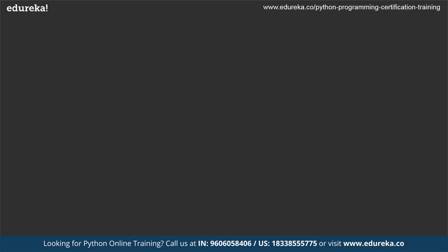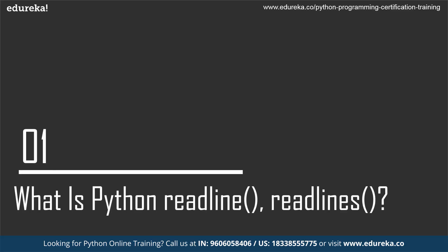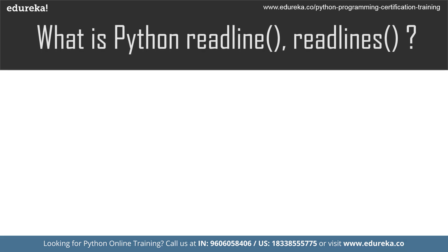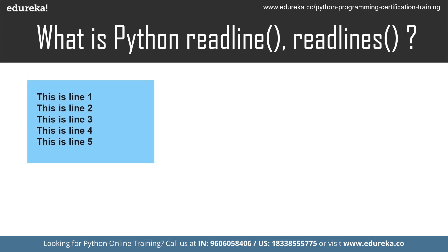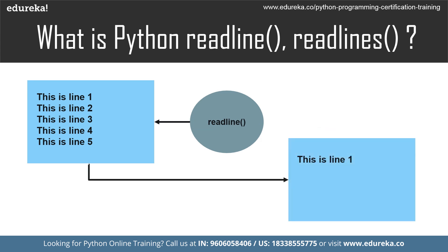Now without any further ado, let us understand Python readline. So what exactly is readline? Python file method readline reads an entire line from the file. The trailing newline character is kept in the string, and if the size argument is present and non-negative, it is a maximum byte count including the trailing newline, and an incomplete line may be returned. In simple words, the Python readline method will return a single line from the file when called.